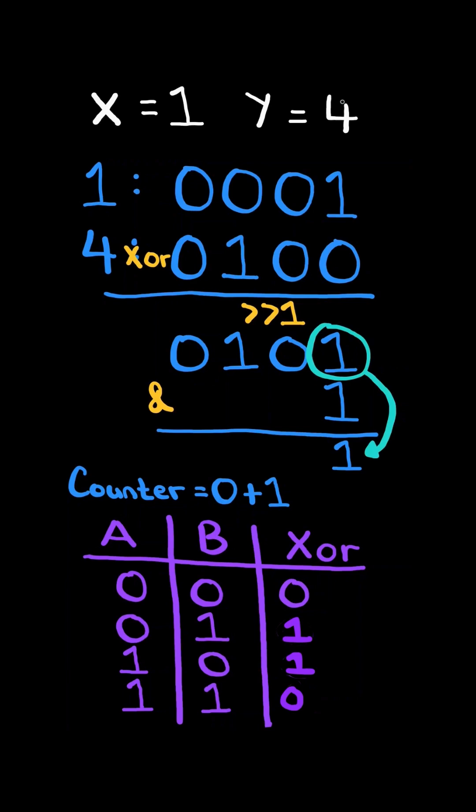Finally, we right shift the result by 1. This removes the last bit, and we continue the algorithm.